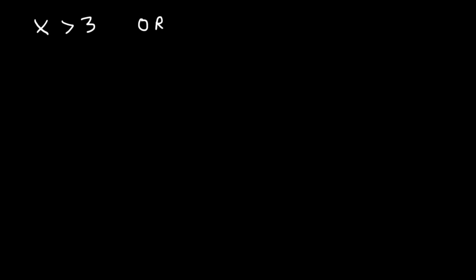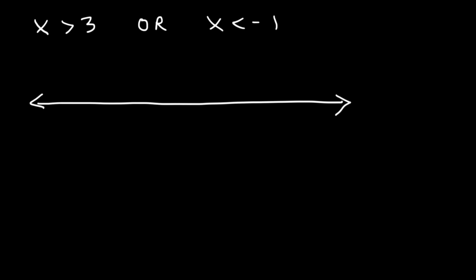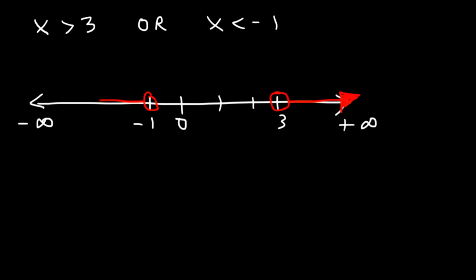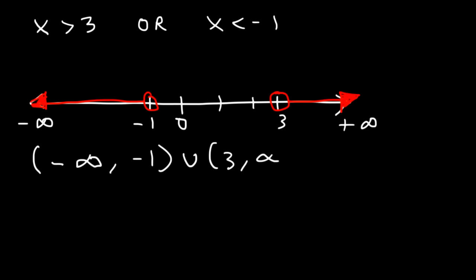Here's another one you can try. Let's say x is greater than 3, or x is less than negative 1. How can we plot it on a number line, and how can we represent the solution using interval notation? So let's put 0 in the middle, here's negative 1 and here's 3. So x is greater than 3: open circle, shaded towards the right. And x is less than negative 1: open circle, shaded towards the left. In interval notation, it's going to be negative infinity to negative 1, union 3 to infinity. We don't have any closed circles, so there won't be any brackets.